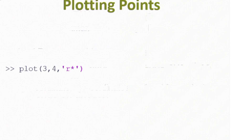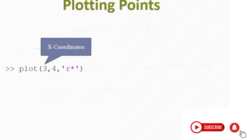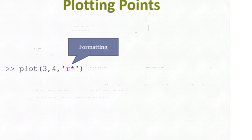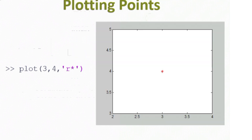Here we have a simple example. We have our key command plot. The first argument is the X coordinates of the points — I have one X coordinate, X equal 3. The next argument is the Y coordinates — one Y coordinate, Y is equal to 4. Of course the number of X coordinates and Y coordinates must be exactly the same. The third argument is formatting: the R here means red, and the star means I want my data point to appear as an asterisk. If I run this command in MATLAB, I get a point at (3, 4), and it's a red star.